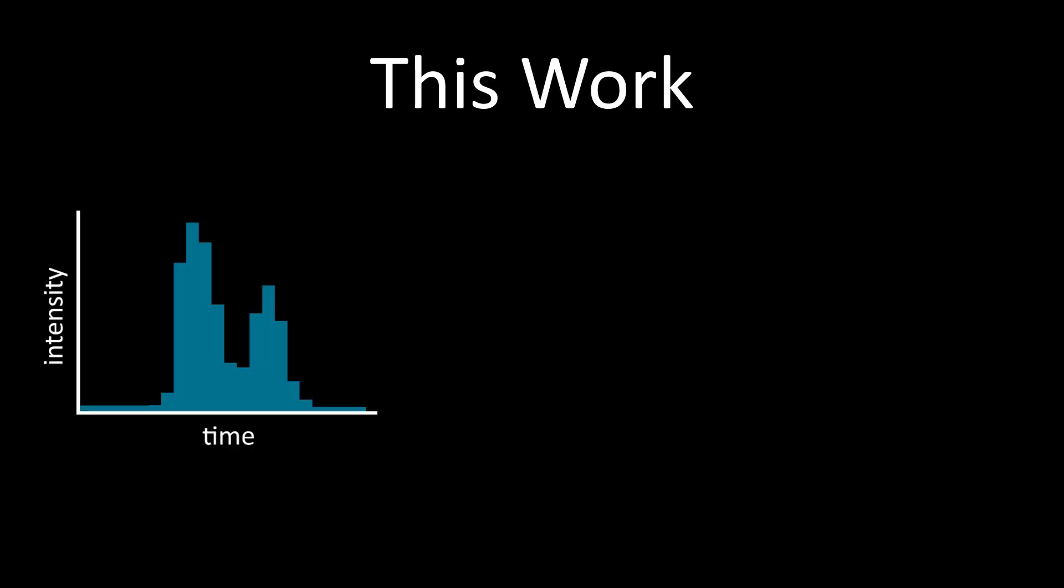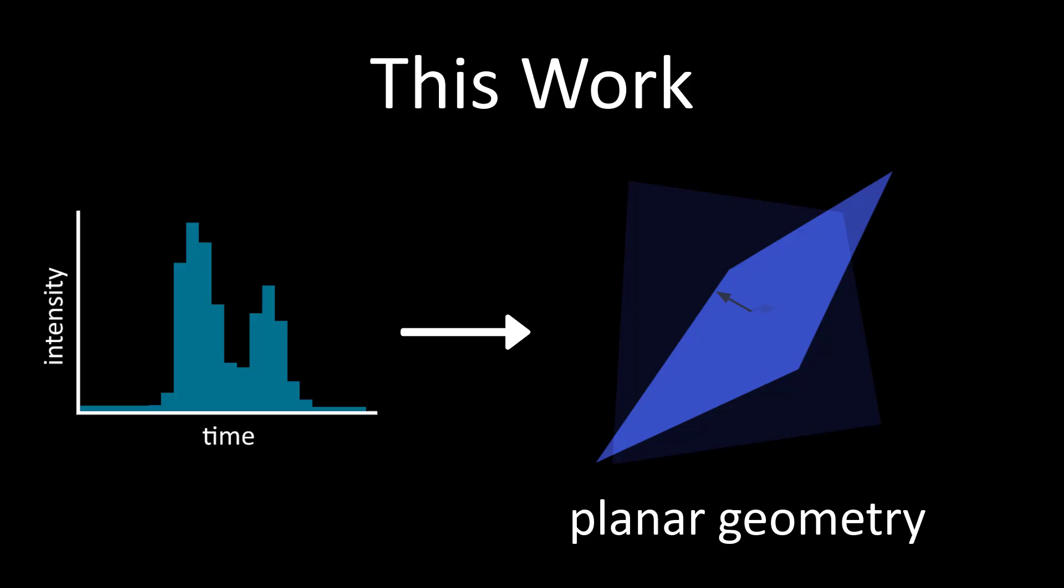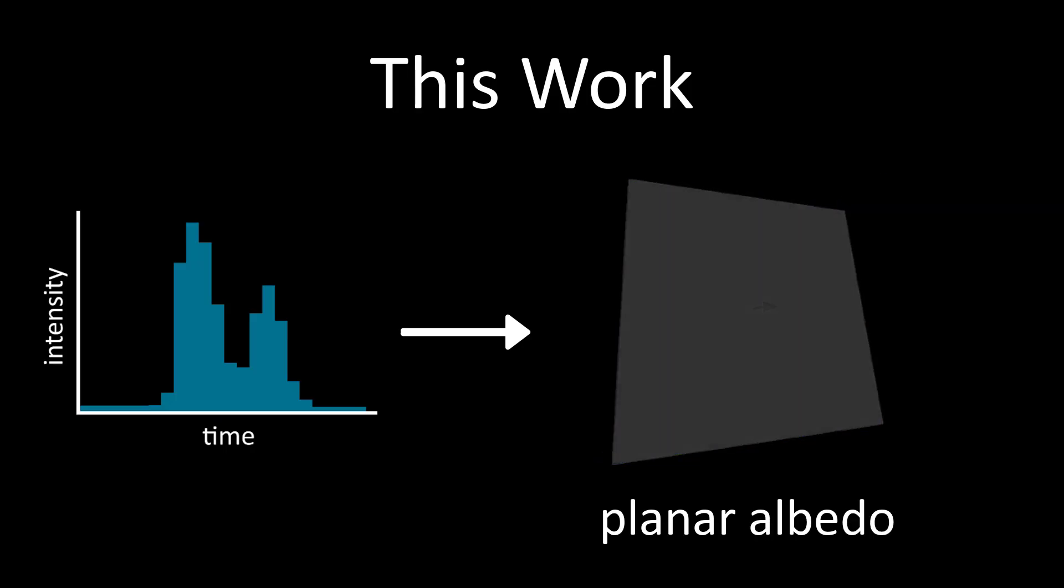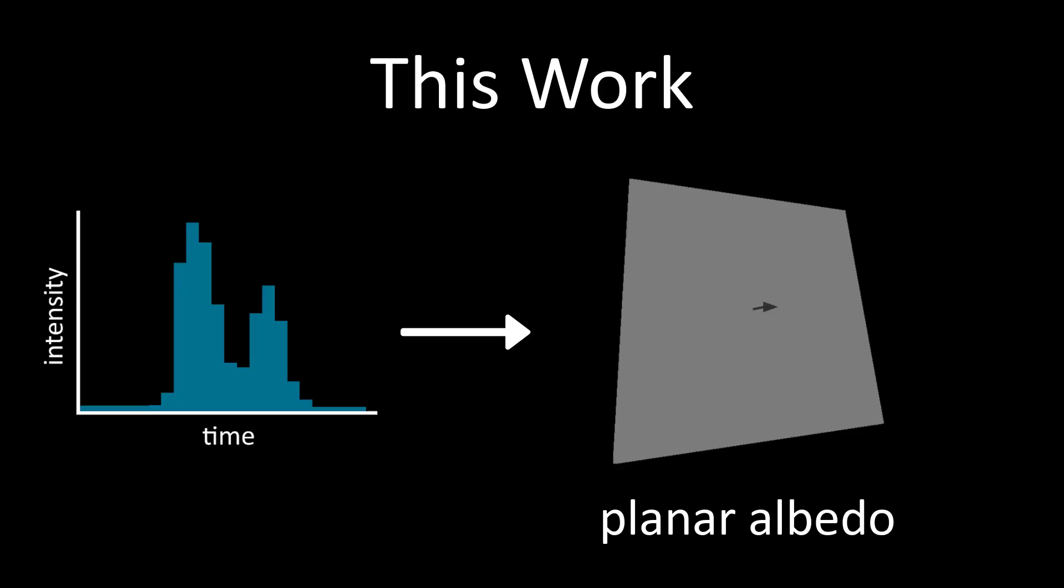In this work, we show that it is possible to recover more than coarse depth estimates from the measurements of transient sensors. We directly utilize the transient histograms captured by these sensors to recover accurate planar geometry and consistent planar albedo from a single transient sensor measurement.